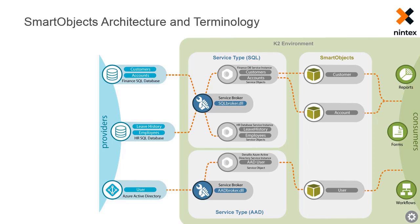Next, suppose we want to expose user data from Azure Active Directory as a smart object. Because we are connecting to this system, we register an instance of the Azure Active Directory service type to expose user data that lives in our Azure Active Directory domain for Denalix. This creates service objects for the entities in the Azure Active Directory system, which happens to be the Active Directory user in this example. When we create a user smart object that presents data from Azure to our consumers, note that we are using a different service type because we are connecting to a completely different technology.